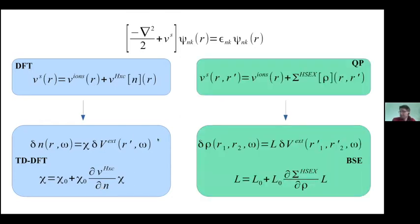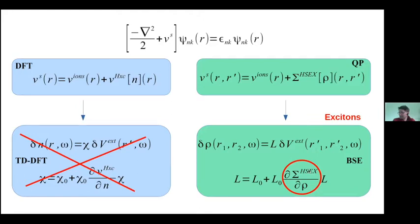An alternative to density functional theory is many-body perturbation theory. In particular, if we take a static approximation for the self-energy, we can write a single-particle equation with a non-local object, and then we can move from the quasi-particle equation to describe the response to an external perturbation. We end up with the Dyson equation, also known as the Bethe-Salpeter equation. I stress the importance of having a non-local self-energy — it is the non-local self-energy that gives the physics of the exciton.